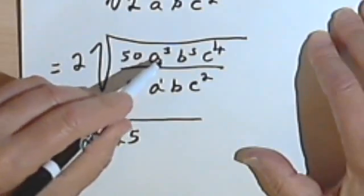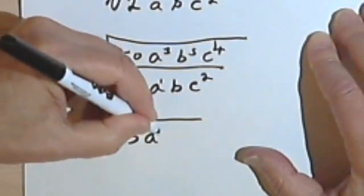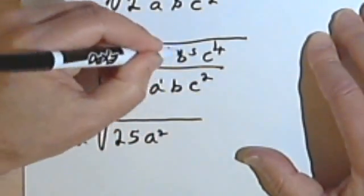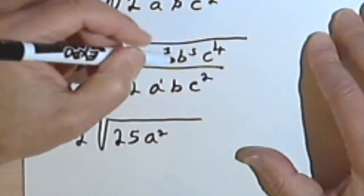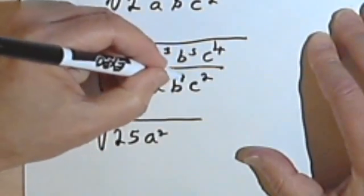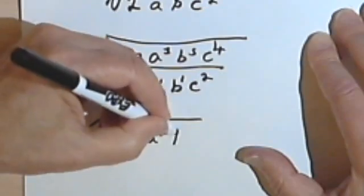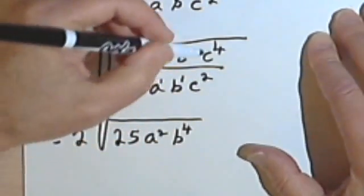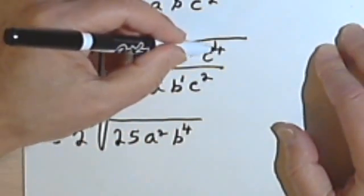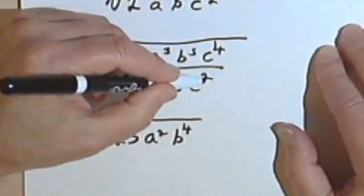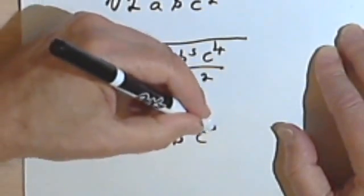this exponent, the 1, from the 3, so 3 minus 1 is 2, that would mean a squared. b to the 5th over b, so I'm subtracting a 1 from 5, will give me b to the 4th. And c to the 4th over c squared, subtracting the 2 from the 4, I'll get a c squared.